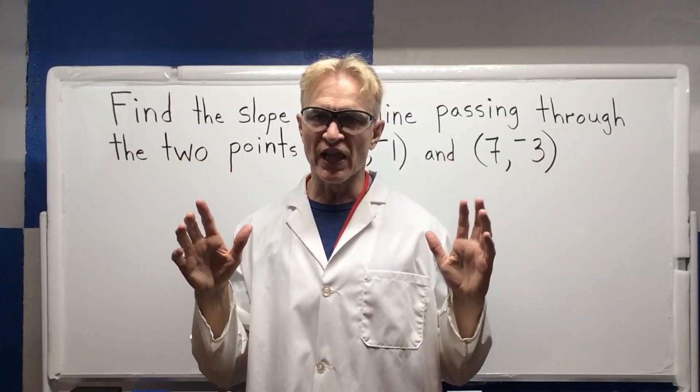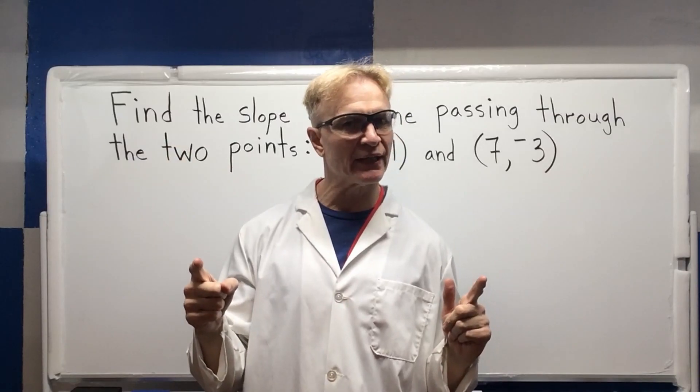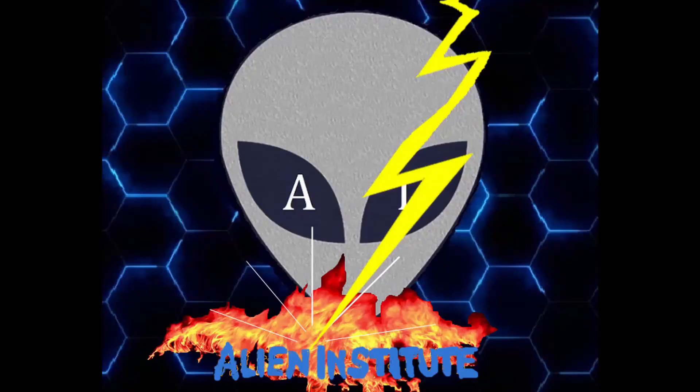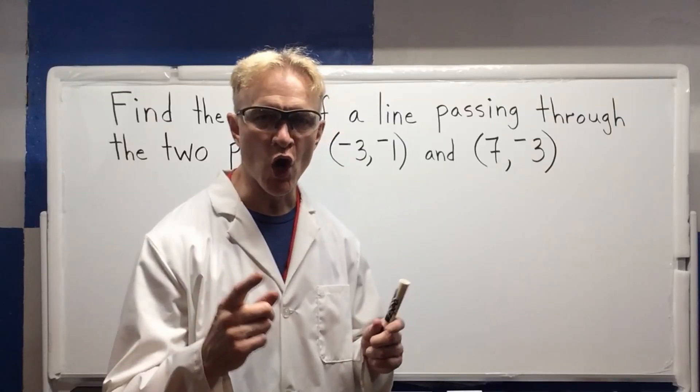Find the slope of a line passing through two points at lightning speed. Let's roll.